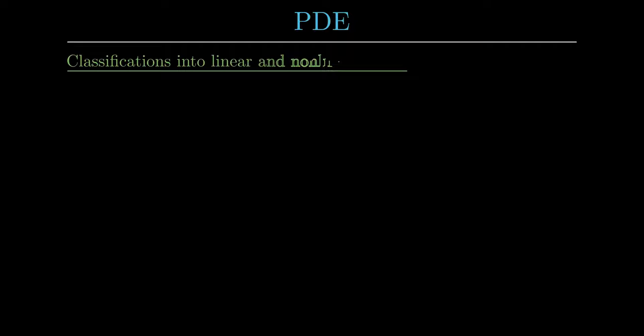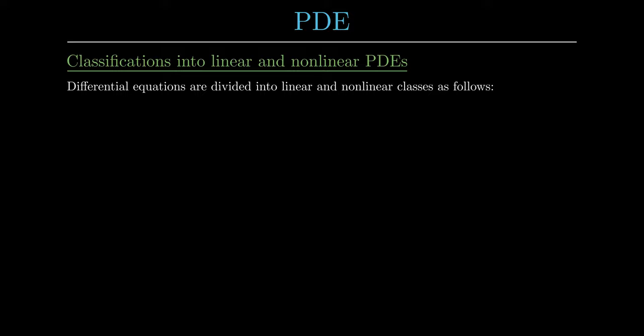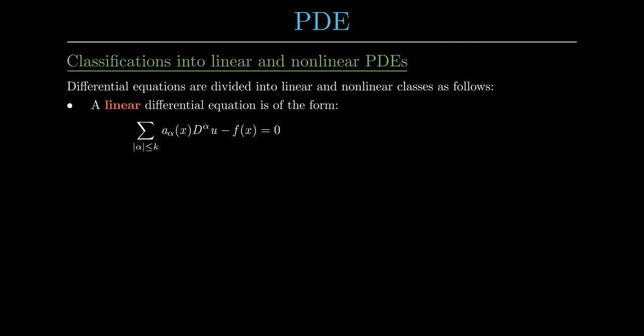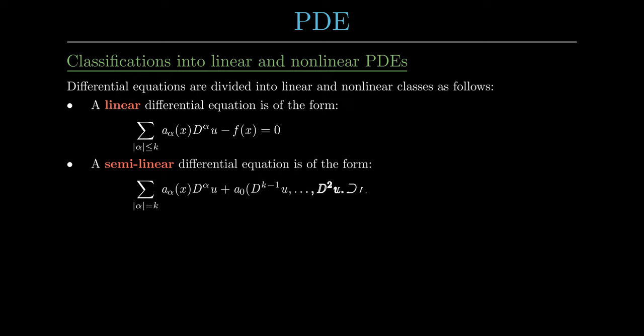We now look at classifications of linear and nonlinear differential equations. Each differential equation which is not linear is called nonlinear, but the nonlinear case can be subdivided into further subcategories. In a linear differential equation, all coefficients of u and its derivatives must not have any u-dependency. In a semi-linear PDE, coefficients of the highest-order derivatives must not have any u-dependencies, and the remainder of the PDE can be an arbitrary function a0 of the derivatives of u, the function u itself, and the spacetime coordinate x. This means nonlinearities can appear in all terms of lower order.